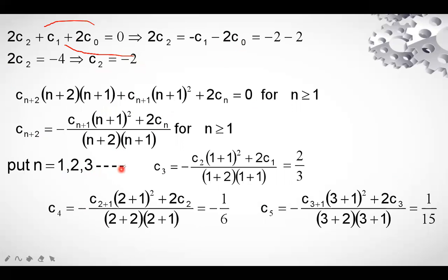Substituting n = 1 into the recurrence: we get c₃ using c₂ and c₁. With c₁ = 2, c₂ = −2, and (1+1)² = 4, we compute c₃. For c₄, put n = 2: using 2 + 2 = 4 as denominator, substitute c₃ and c₂ to get c₄. Similarly, c₅ follows from n = 3. We find 3 to 4 values this way.